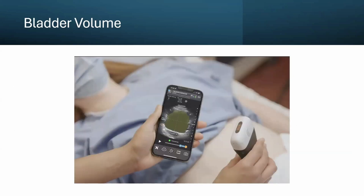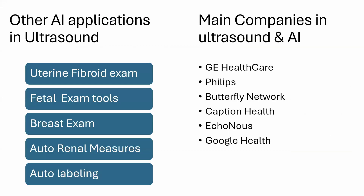Another application that has become more popular and accessible is bladder volume measurement. Most companies have a bladder volume tool where either the user fans through the bladder or the probe automatically fans through it, giving a very quick bladder volume reading. In addition, there are many other applications for ultrasound AI: uterine fibroid exams, fetal exams, breast exams, auto-renal measures, and auto-labeling. All of these are currently being used. I also found the fetal exam really interesting — as my wife recently had a baby, we were in for ultrasounds a lot, often a half hour to an hour, and the AI currently out there is really focusing on decreasing the time it takes to do all the measurements.